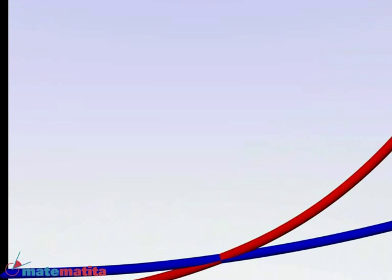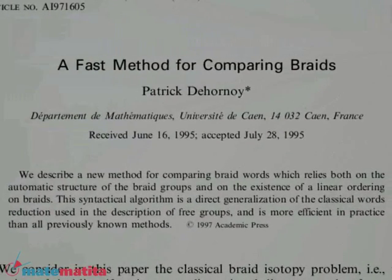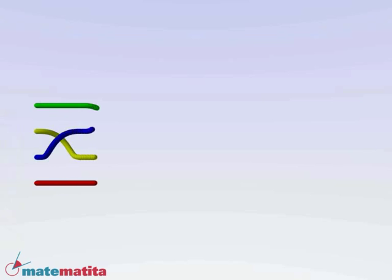This is why mathematicians look for other, quick algorithms. The fastest found so far is probably the one proposed about 15 years ago by d'Ornois, a French mathematician. It is based on manipulating braids and is called handle reduction.